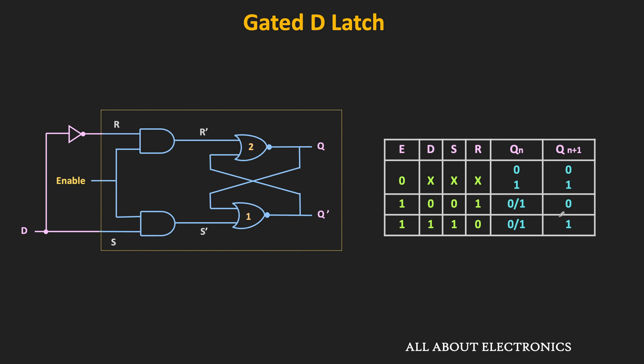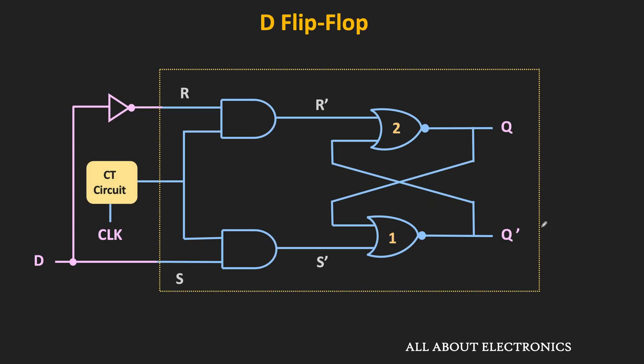This is the truth table of this gated D latch. By adding the clock transition circuit to the gated D latch, it can be converted into the D flip-flop. We already discussed this pulse transition circuit in the previous video on the SR flip-flop — please refer to that video for more information. This is the circuit of the D flip-flop.